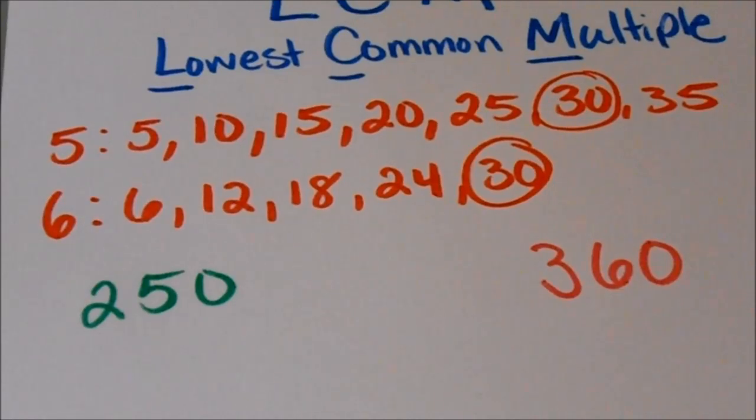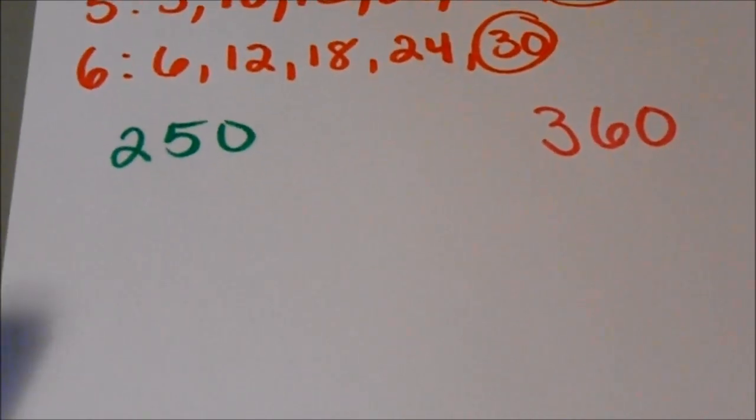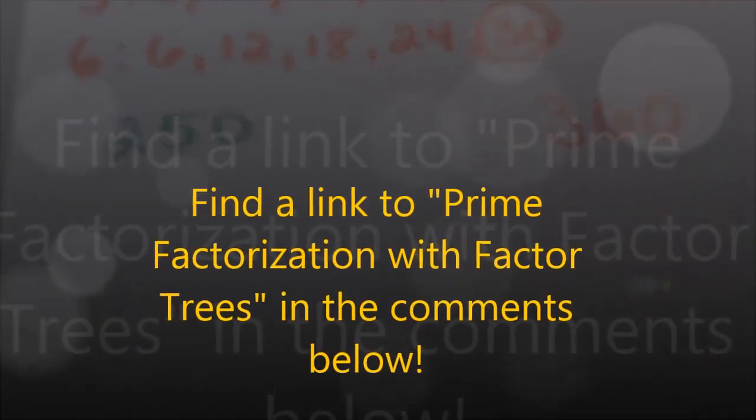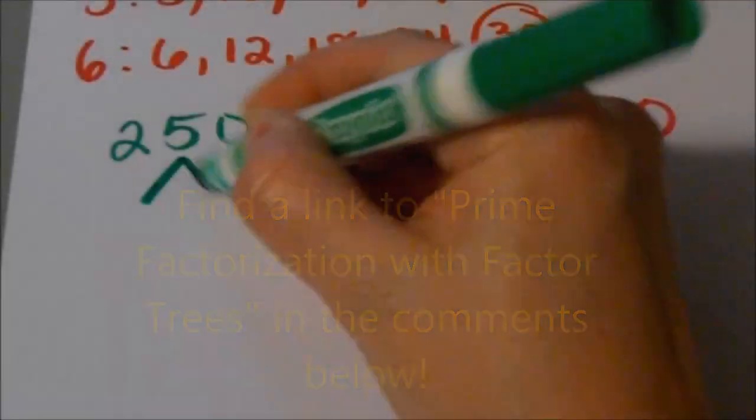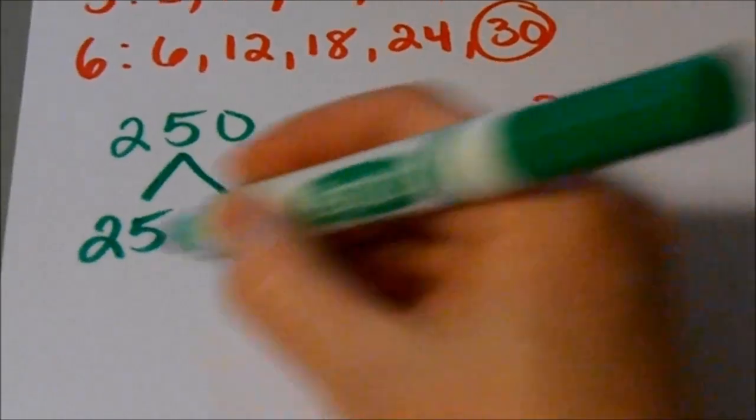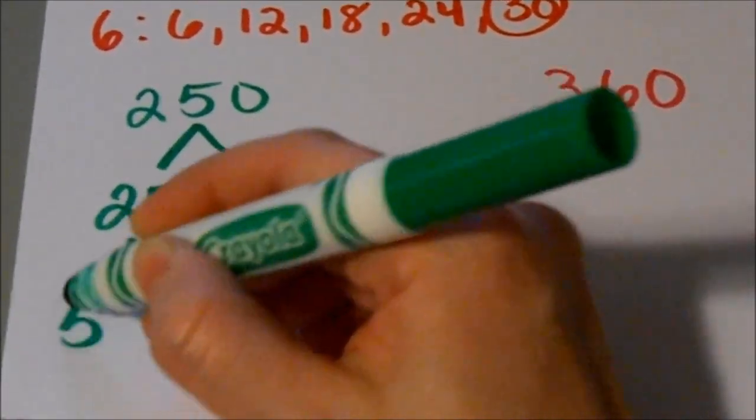Okay. So I could make lists of both of these numbers and all of the multiples of 250 and 360. Except that seems like a really daunting task to me. There's a much easier way to do it. So if you haven't, again, if you haven't seen my prime factorization video, my factor tree video, you should watch that. So when we factor these numbers, we're just trying to figure out what numbers can I multiply together to make this number up here until we get down to our prime numbers.